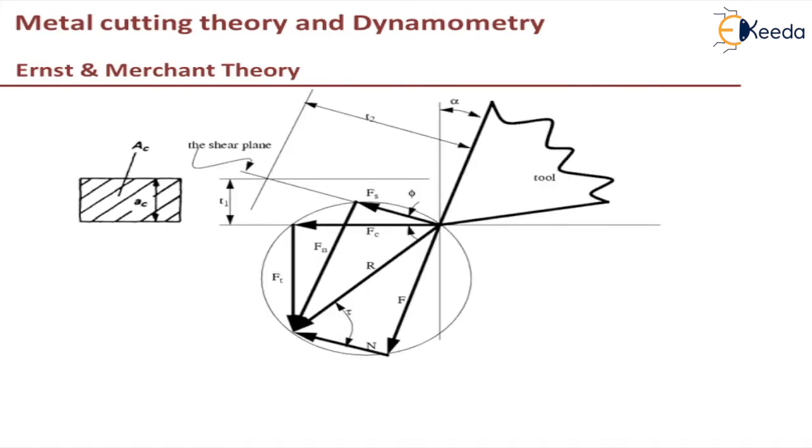For that I will consider the merchant circle diagram which we are already familiar with. These are the forces in the merchant circle diagram. Let me consider this triangle with shear force, backup force, and the resultant force. The angle is phi plus tau minus alpha. By this triangle I can write cos(phi + tau - alpha) equals Fs by R, so Fs equals R cos(phi + tau - alpha).